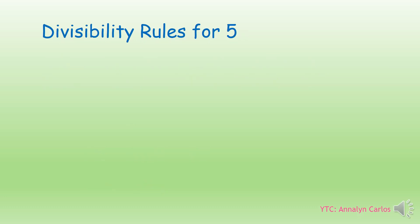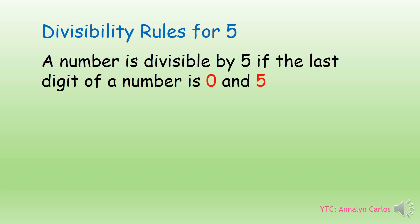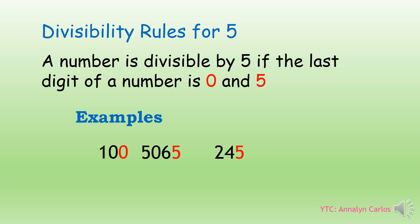For the divisibility rules for 5, this is the thing that we should remember: a number is divisible by 5 if the last digit is 0 or 5. Examples: we have 100, 5065, 245, 30, and 705. Since these numbers end in 0 or 5, we can say that these numbers are divisible by 5.